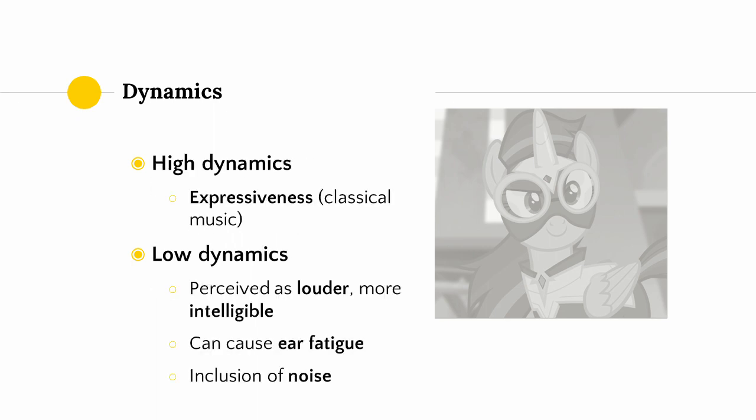In some genres of music, having a high level of dynamics is the standard — for instance, in classical music. The dynamics created by the player of an instrument are considered to be an important part of the musical expression. If we think about a solo piano or solo violin piece, since there's only one instrument, balance is not a big concern, so we can easily achieve a high level of dynamics while still maintaining intelligibility. However, this does not mean that just because we might not be producing classical music, we can squash our dynamics down to zero using a compressor.